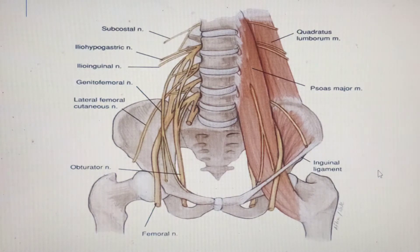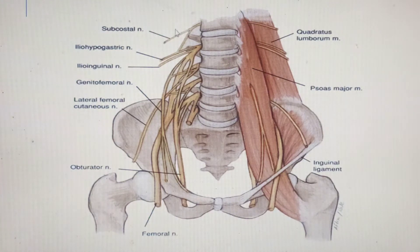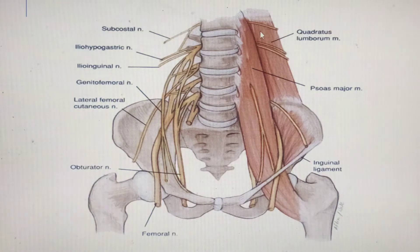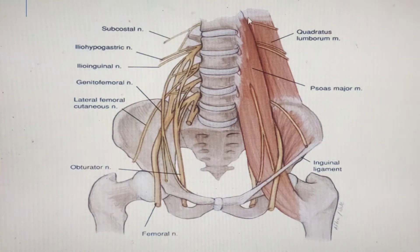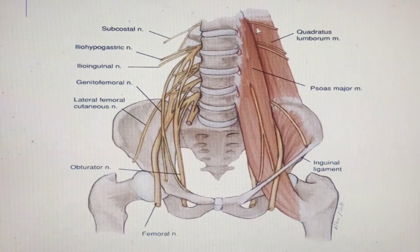Having identified these nerves of the lumbar region, we should be able to identify them in real cross-sections. One important landmark: to locate the subcostal nerve, find rib number 12 — the nerve emerging below rib 12 is your subcostal nerve. Looking at the anatomy, we have the psoas major muscle and the quadratus lumborum muscle. Between these two muscles, below rib 12, you can see the subcostal nerve.